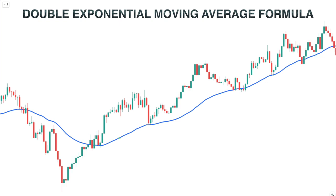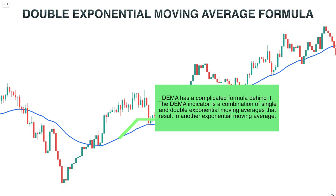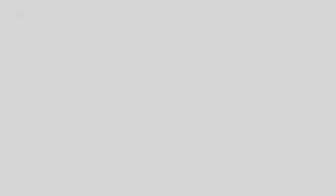Essentially, the DEMA indicator is a combination of single and double exponential moving averages that result in another exponential moving average. Here is the formula: EMA1 equals the exponential moving average of price; EMA2 equals the exponential moving average of EMA1; and DEMA equals 2 times EMA1 minus EMA2.